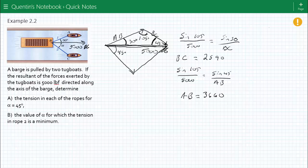So there you go. You have the two forces. For that, that's part A. Part B is the value of alpha for which the tension in the rope is a minimum. So let's look at this.